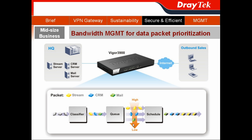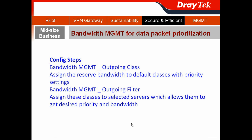For the bandwidth management configuration, you basically go to bandwidth management and choose outgoing class. In the outgoing class, you can assign the reserved bandwidth to the default class with priority setting. After that, you go to the outgoing filter, where you assign these classes to the selected server, which allows them to get the desired priority and bandwidth.